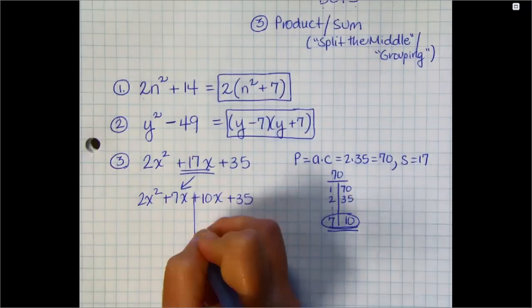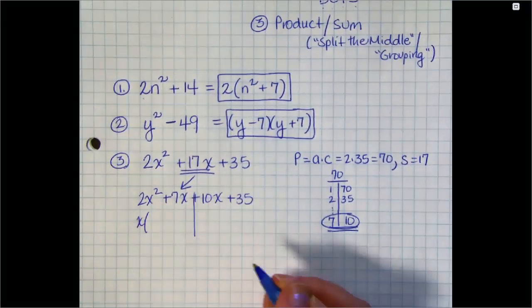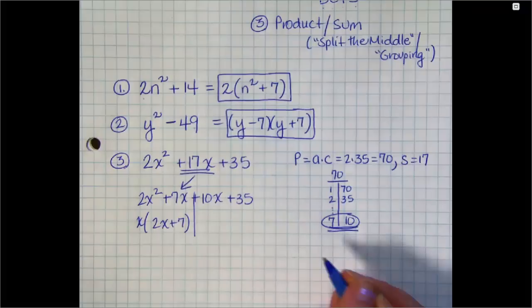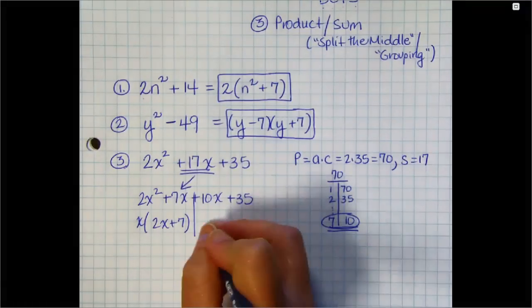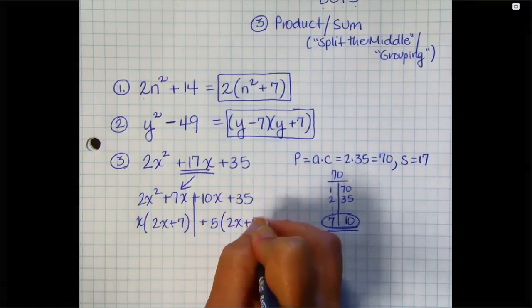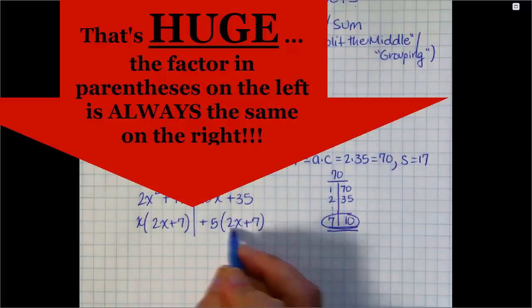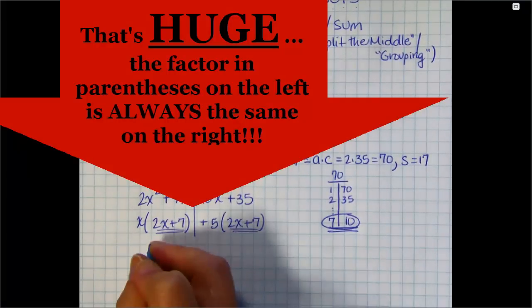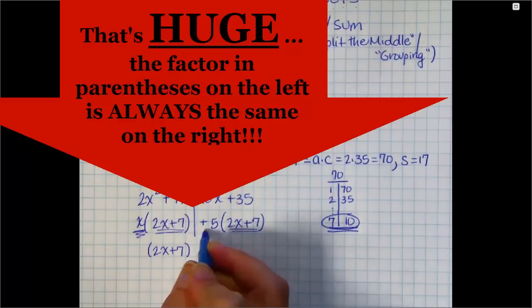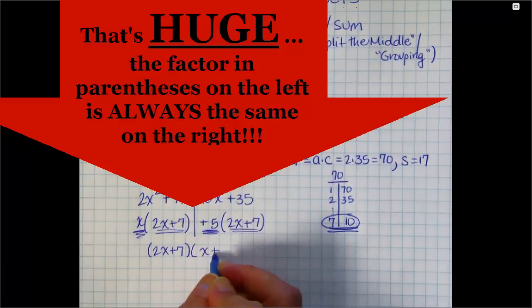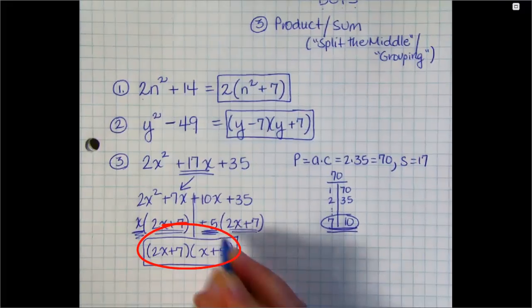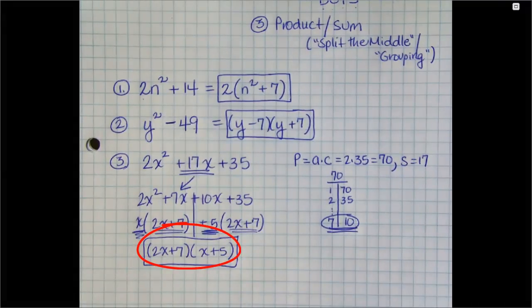Now you split the middle again and you take a common factor out of each side. On my left, I have a common x and I'm left with 2x plus 7. On the right, I have a common factor of 5, so I'm left again with 2x plus 7. In parentheses, you have a new common factor. Those will always be the same. And then the leftovers are your second factor. So 2x squared plus 17x plus 35 factors to 2x plus 7 times x plus 5.